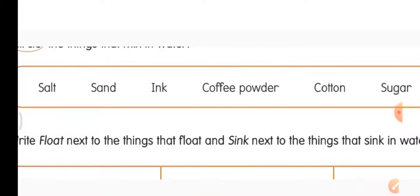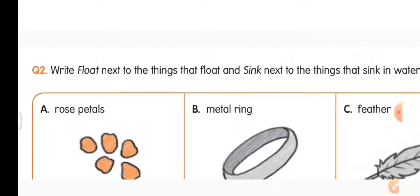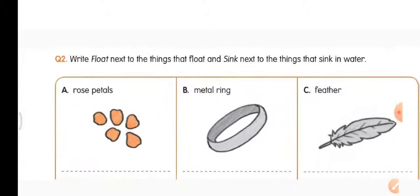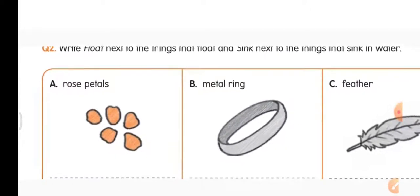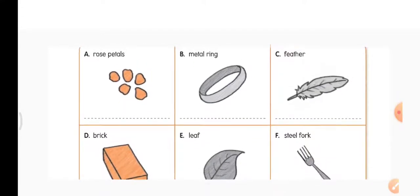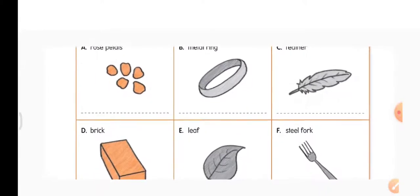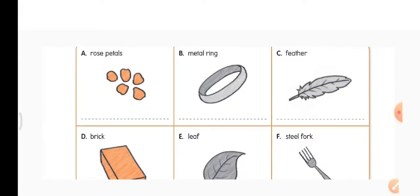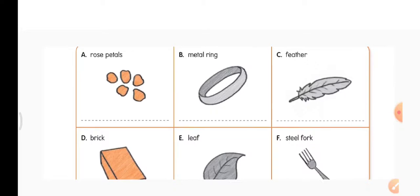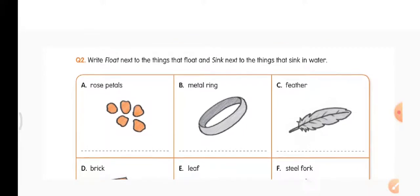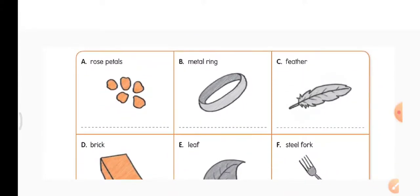So you are going to circle salt, ink, coffee powder, and sugar. Question 2: Write 'float' next to things that float and 'sink' next to things that sink in water. Pictures given include: rose petals, metal ring, feather, brick, leaf, and steel fork. Under floating things write 'float,' under sinking things write 'sink.'